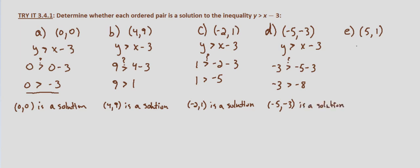Last but not least, (5,1). So y is greater than x minus 3. What we want to know is: Is 1 greater than 5 minus 3? 1 is not greater than 3. So our one exception of the choices we had. (5,1) is not a solution.